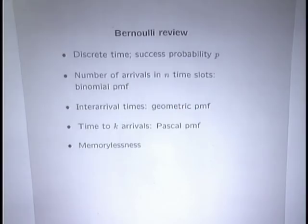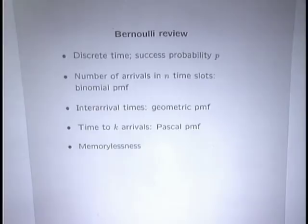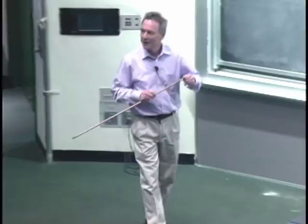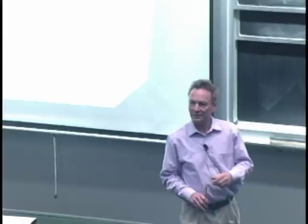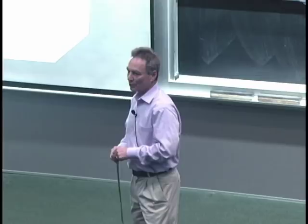For the Bernoulli process we work in discrete time with time slots. During each slot there's an independent Bernoulli trial with probability p of success. Different slots are independent and p is the same for every slot. If we have n time slots, the number of arrivals is given by the binomial PMF — the number of successes in n trials is a random variable with a binomial distribution.